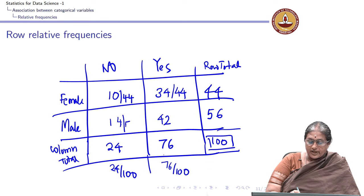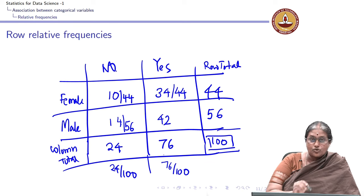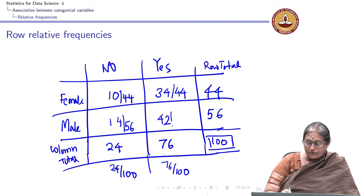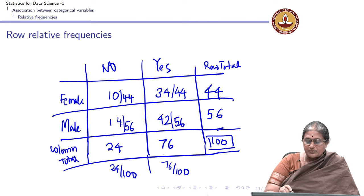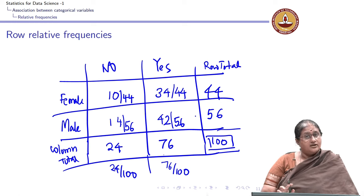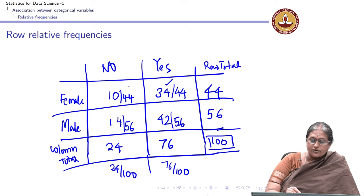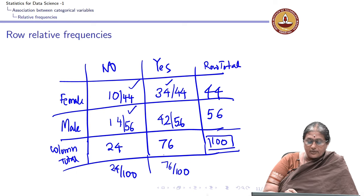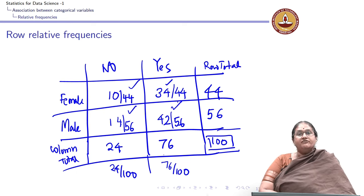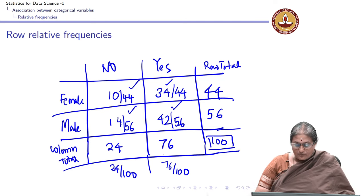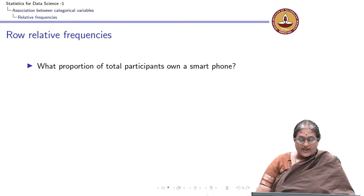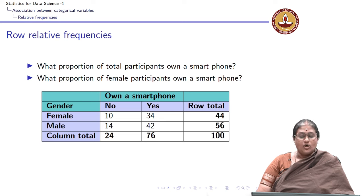Likewise, 14 by 56 is the proportion of male participants who do not own a phone, and 42 by 56 is the proportion of male participants who own a phone. These values — 10/44, 34/44, 14/56, and 42/56 — are what we refer to as the row relative frequencies.